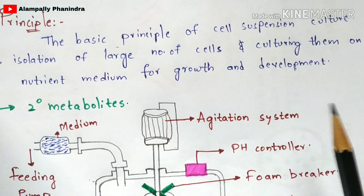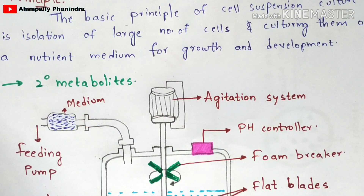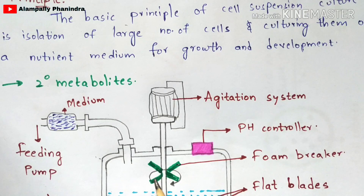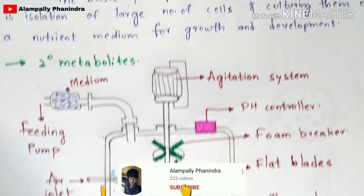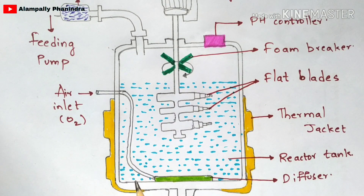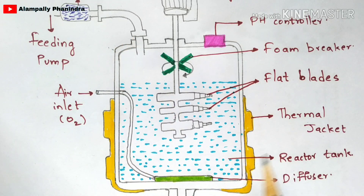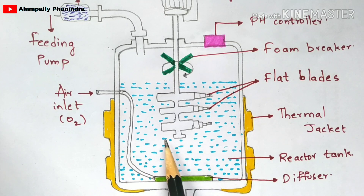The main aim of cell suspension culture is that it mainly helps in the production of secondary metabolites. Secondary metabolites are produced from primary metabolites. The bioreactor plays a major role in this production — primary metabolites in the form of a medium get added into the bioreactor, and secondary metabolites get produced out from the outlet of this bioreactor tank.